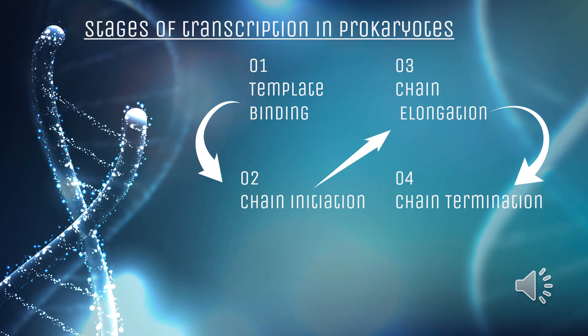To start us off, here are the stages of transcription in prokaryotes. In order, we have template binding, chain initiation, chain elongation, and chain termination. We will be discussing each stage in further detail.